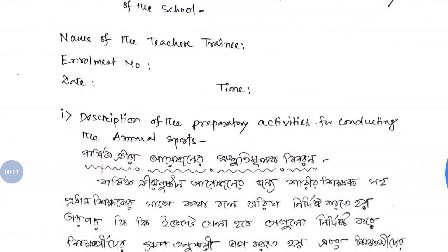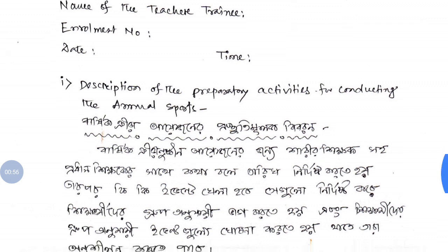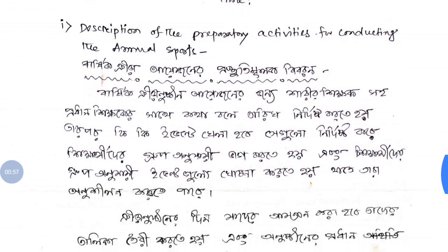Section 4.1: Description of the preparatory activities for conducting the annual sport. This includes name, number, principal details, and related information.